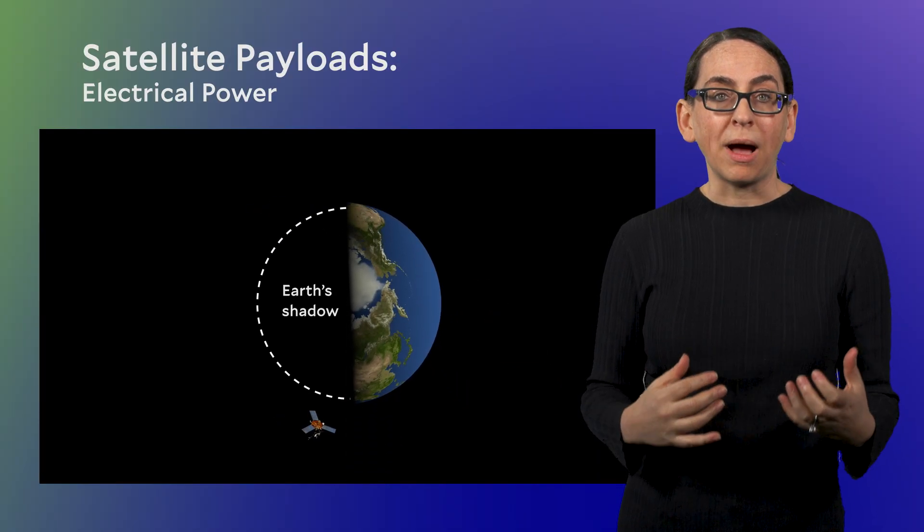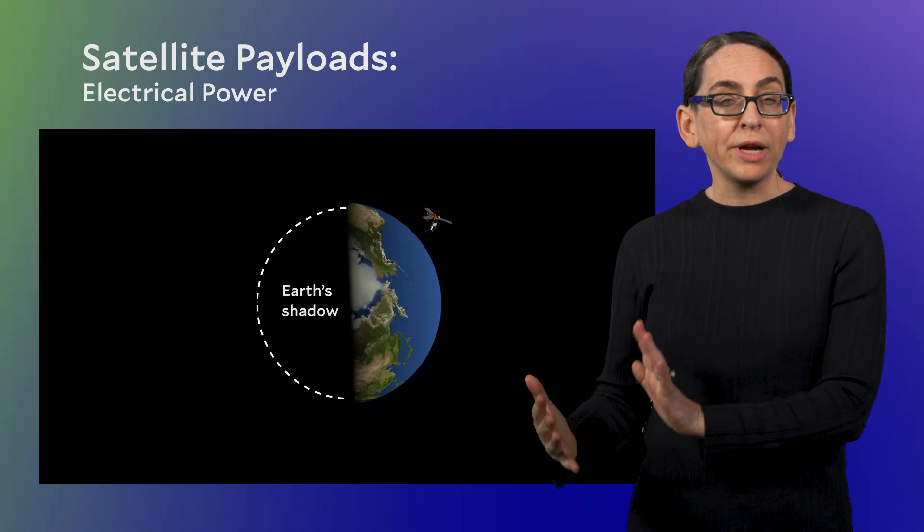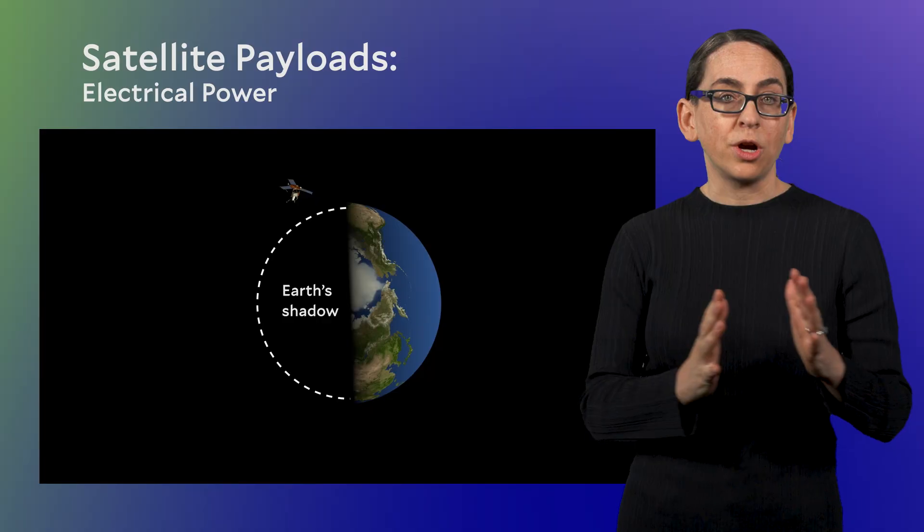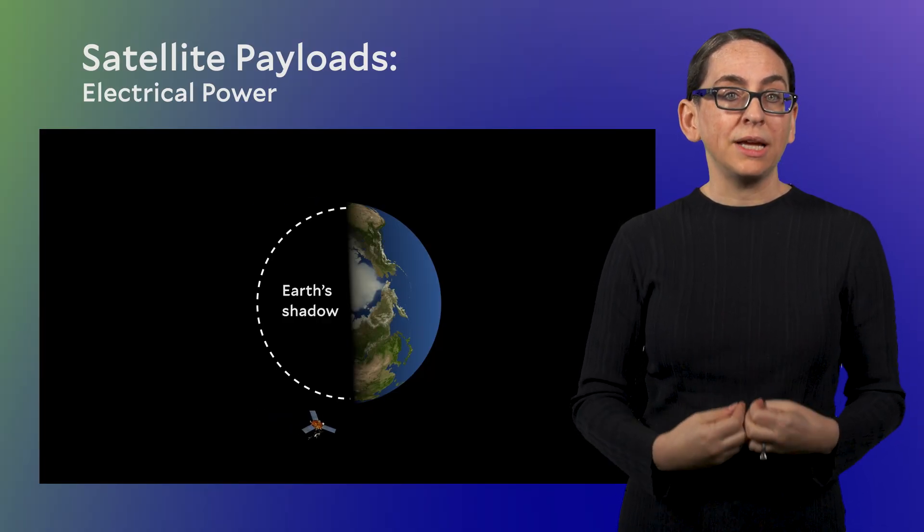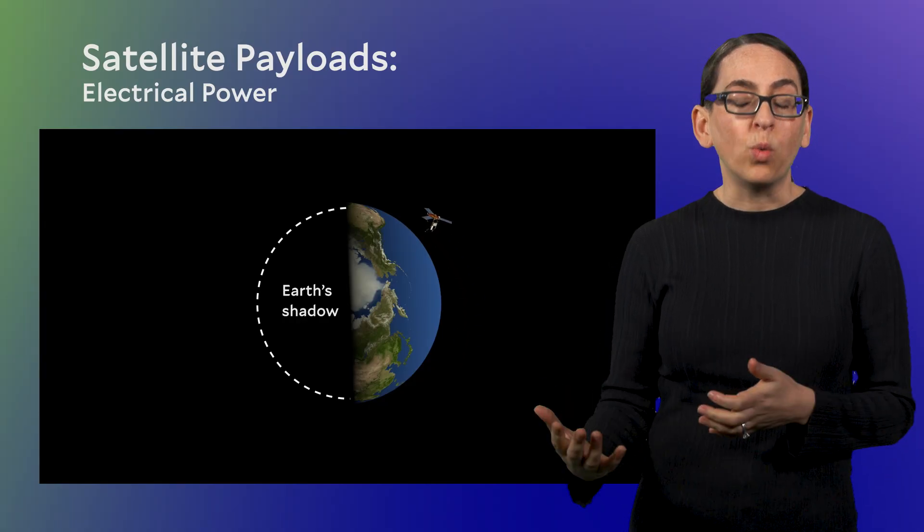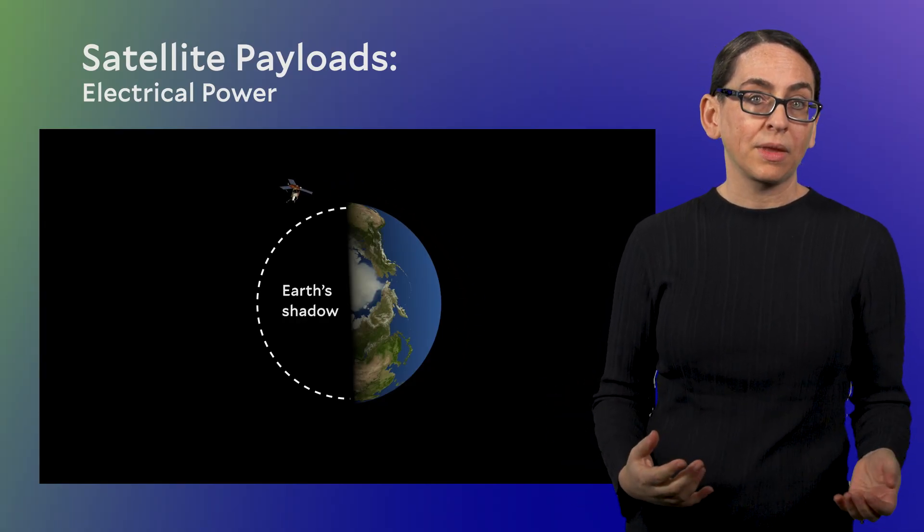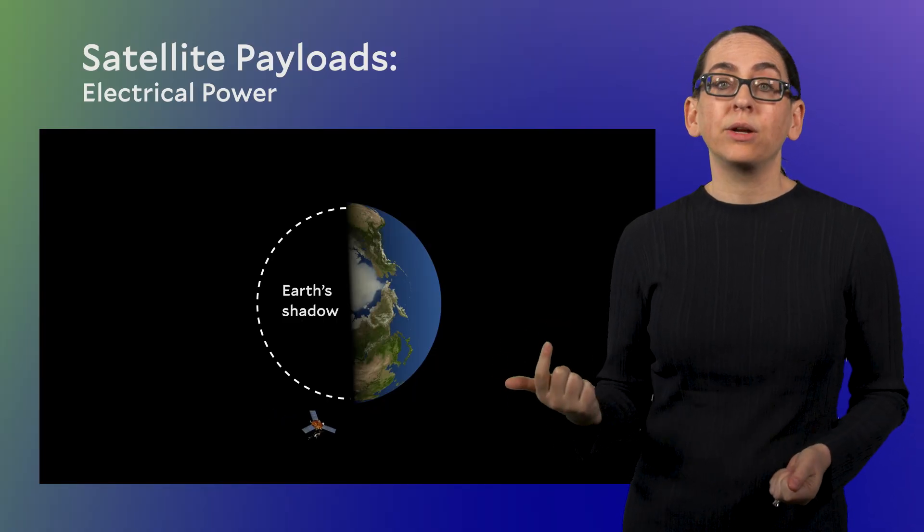And so for this reason, solar panels are always combined with a rechargeable battery. The electrical power created by the solar panels charges the battery when the Sun is visible. And it's the battery that supplies electricity to the rest of the satellite, allowing power to be stored and used where and when it's needed. The battery needs to both withstand the extreme environment of space, and also needs to be able to charge and discharge many times per day over the several years or more of a lifetime of a satellite.